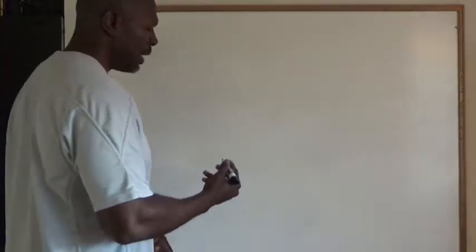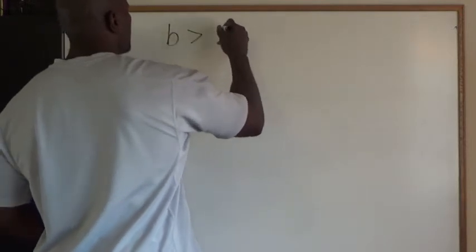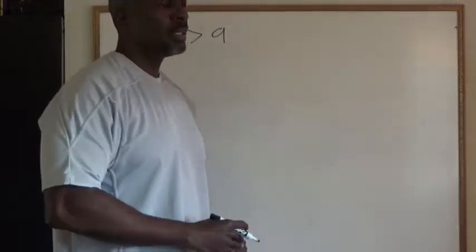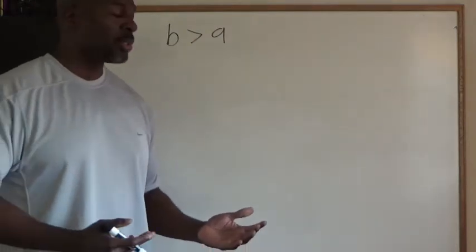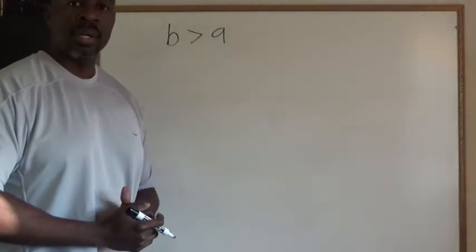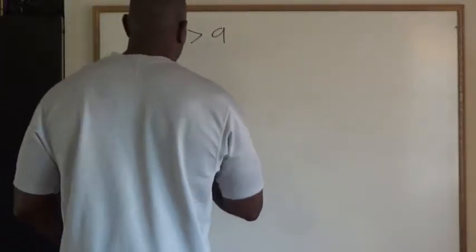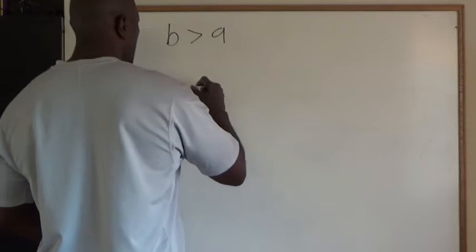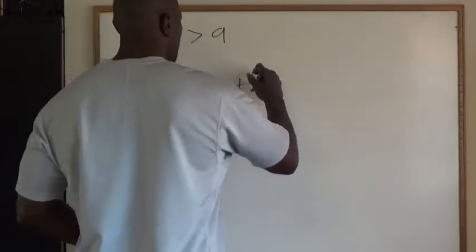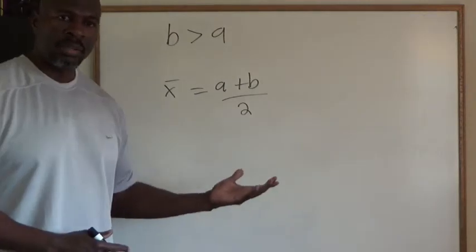So say I have two numbers A and B where B is greater than A. And A and B can be complex numbers. So I have two numbers A and B where B is greater than A. And I have a value defined as X bar where X bar is A plus B over 2. That's called the average.